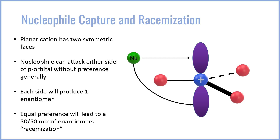If you initially start off with the R enantiomer for a chiral center and then perform an SN1 reaction on that chiral center, your product mixture will have an equal mix of R and S at that stereocenter. You will lose optical rotation at that stereocenter because it has been racemized, so your alpha value will now be equal to zero degrees.